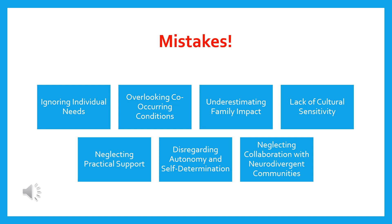The third mistake is underestimating family impact. This is really about the systemic perspective in couple and family therapy. While focusing on the needs of the neurodivergent individual, it's crucial not to overlook the impact on other family members. Neurodiversity in family therapy should consider the experiences, emotions, and support needs of all family members, including siblings, parents, and others who live together — the whole system — to foster understanding and cohesion within the family.